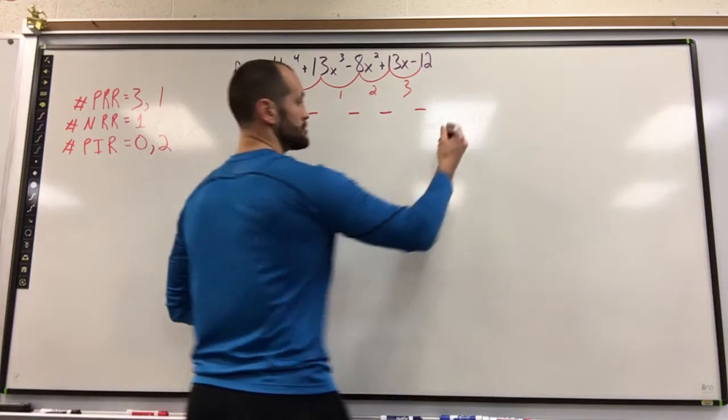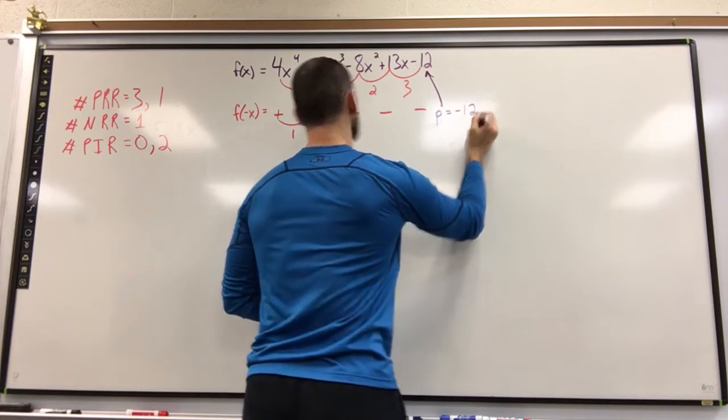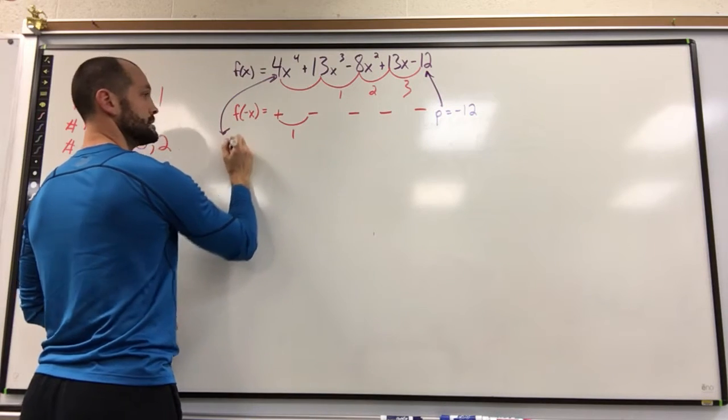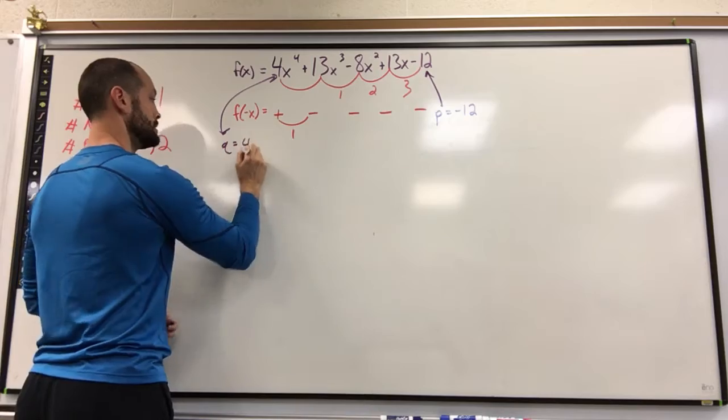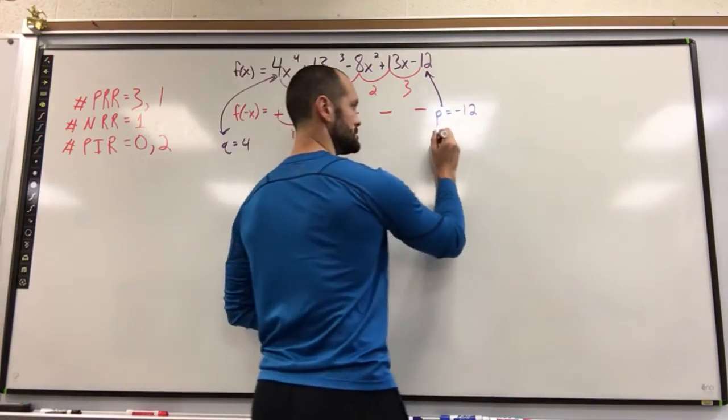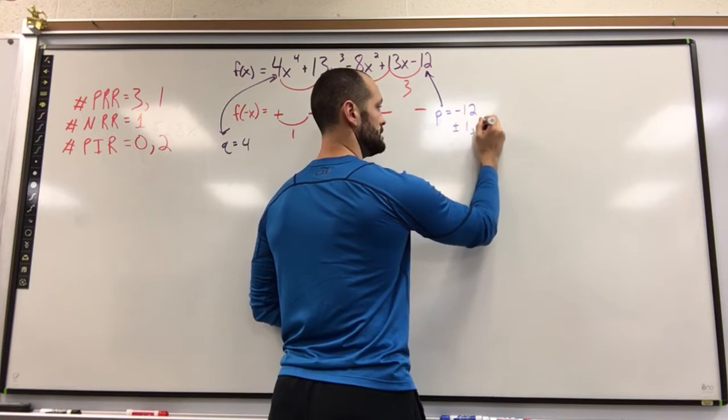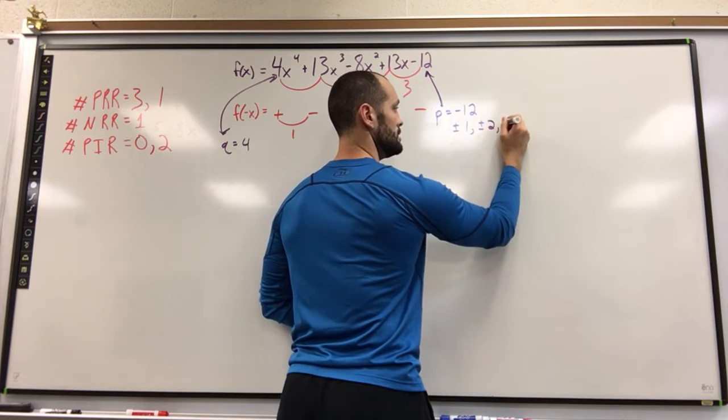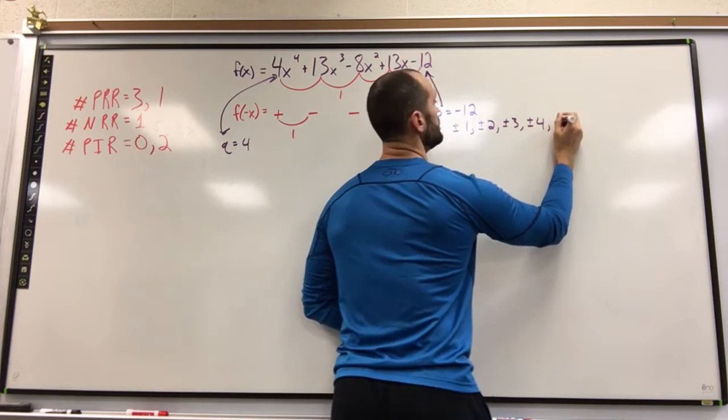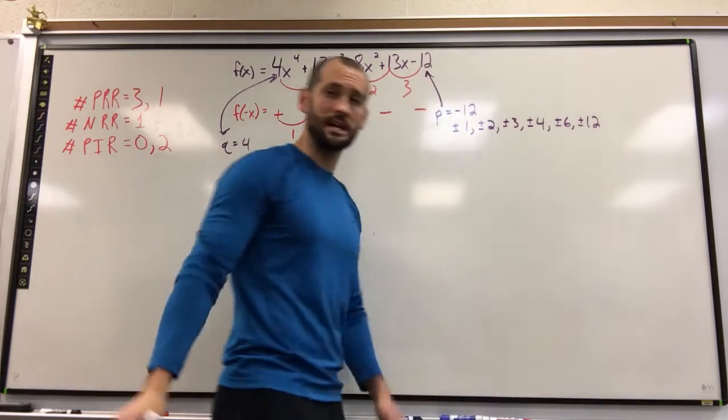P is represented by your constant term. Q is represented by your lead coefficient. So what we need to do first is think of all the factors of P. So I'm going to list those. The factors of negative 12 are plus or minus 1, plus or minus 2, plus or minus 3, plus or minus 4, plus or minus 6, plus or minus 12. There's a lot there.